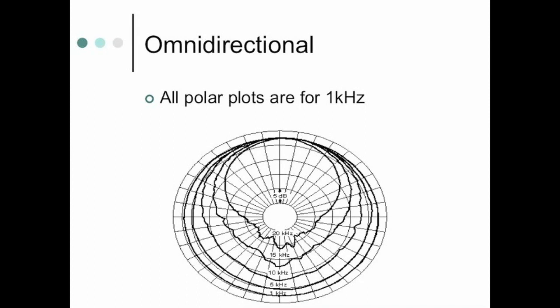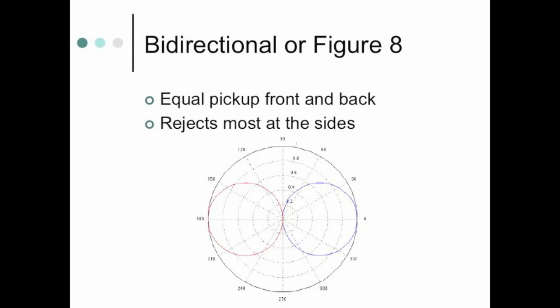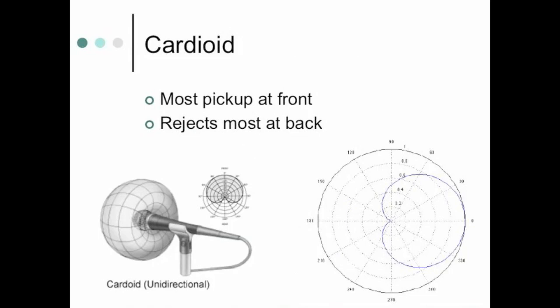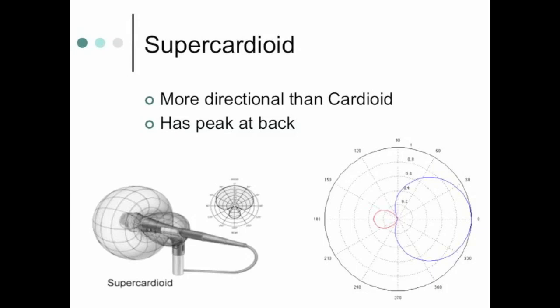This ties into what we discussed about how ears pick up directionality — at low frequencies, microphones almost all become omni-directional, but at high frequencies they all become more directional. Most polar plots showing pickup directions are based around one kilohertz for comparison. Bi-directional, or figure-eight, picks up equally from front and back and rejects most at the sides. Cardioid is named for its heart-shaped polar pattern — it picks up primarily from the front and rejects sound from behind.